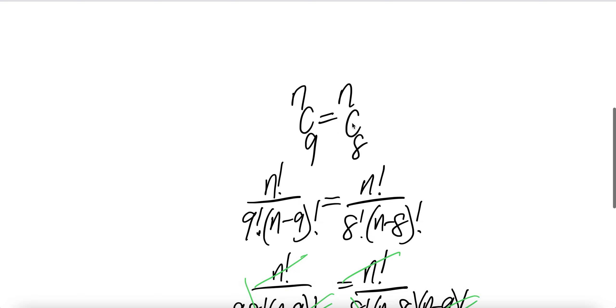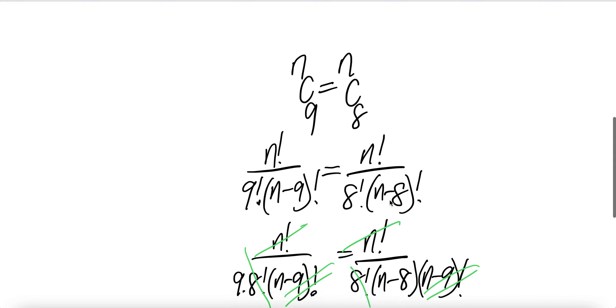n choose 9 is equal to n choose 8. So let us write n choose 9. n choose 9 is upstairs factorial divided by the downstairs factorial times the upstairs minus downstairs factorial. Do the same here. Upstairs factorial divided by downstairs factorial times the upstairs minus downstairs factorial.